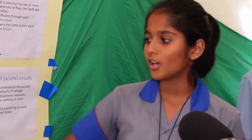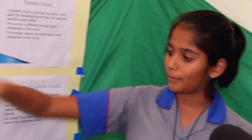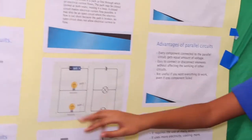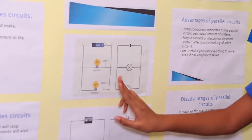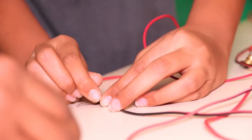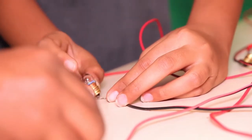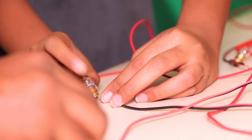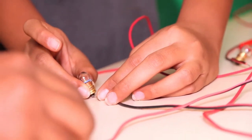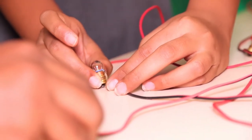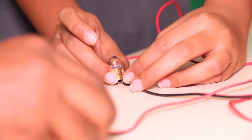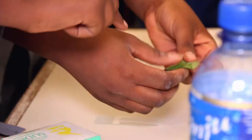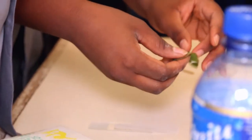For example, if I remove this bolt from this socket, nothing will affect this one. Parallel circuits are useful if you want everything to work even though one component has failed.